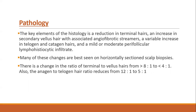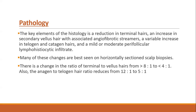Histopathology: the key elements are reduction in terminal hair number, increase in secondary vellus hair, associated angiofibrotic streamers, a variable increase in telogen and catagen hair, and mild to moderate perifollicular lymphohistiocytic infiltrate. Many of these changes are seen in horizontal section of scalp biopsy. The ratio of terminal to vellus hair is 8:1 in normal individuals and becomes 4:1 in androgenetic alopecia. The anagen-to-telogen hair ratio is 12:1 in normal individuals and reduces to 5:1 in androgenetic alopecia.